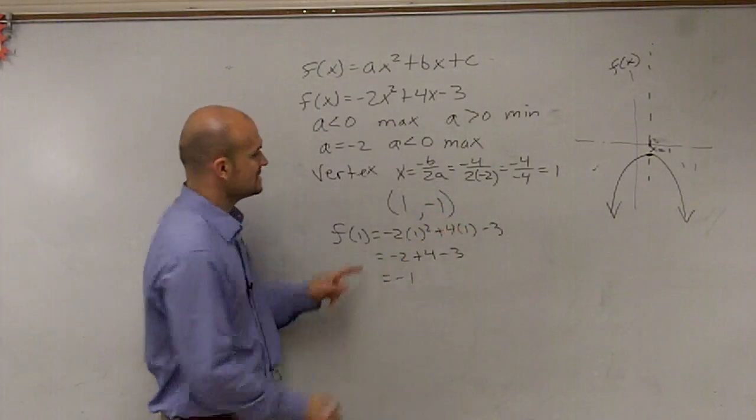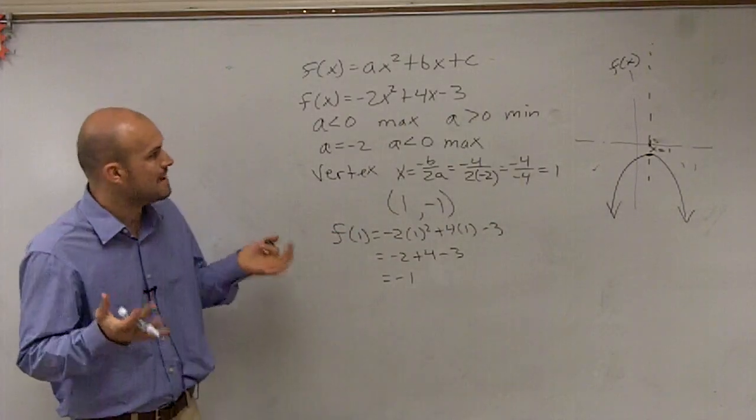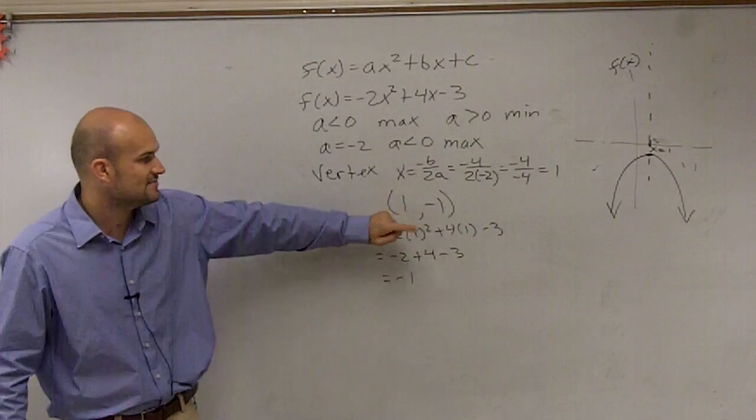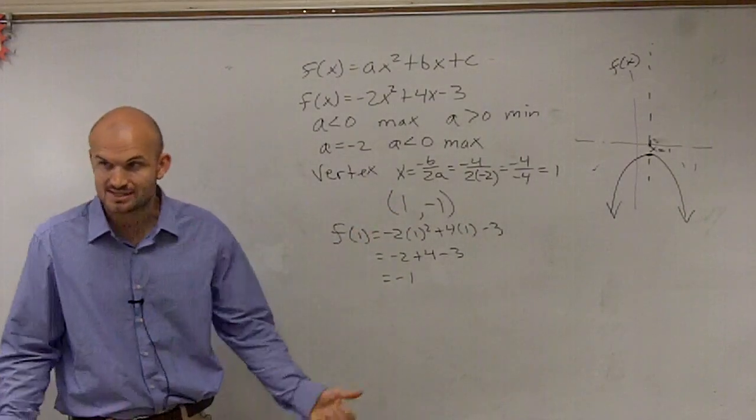So our vertex is at 1 comma negative 1. So the max value, we said this graph has a max value. The max value is at negative 1, because that's going to be your output.